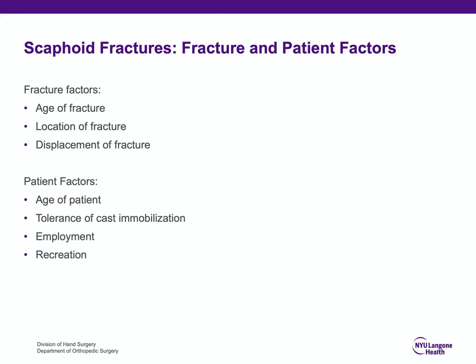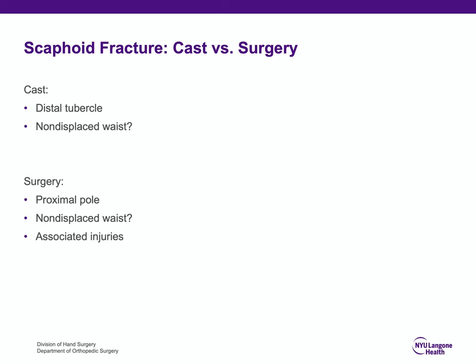For scaphoid fractures, there are fracture factors and patient factors to consider. Fracture factors include the age of the fracture — acute fractures are considered six weeks or less — the location, and the displacement. Patient factors include the age of the patient, tolerance of cast immobilization, type of job, desire to return to work, and recreation. Cast immobilization is indicated for distal tubercle fractures; surgical treatment is indicated for proximal pole fractures; for non-displaced scaphoid waist fractures it is the surgeon's and patient's choice; and for displaced waist fractures with associated injuries, surgical treatment is required.